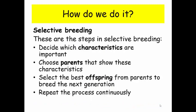So these are the key steps in selective breeding. Number one, you need to decide what characteristics you want. Secondly, you need to pick two parents that show those characteristics. Then you need to pick the best offspring from that generation to breed the generation after. And you're going to repeat that continuously until you've achieved the characteristics that you want.